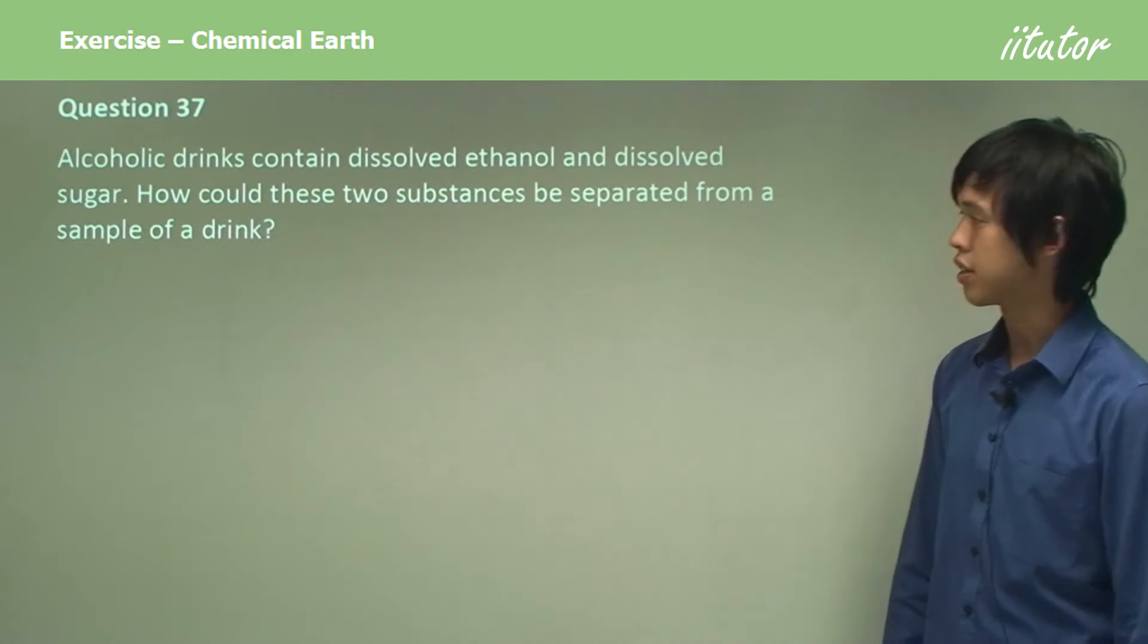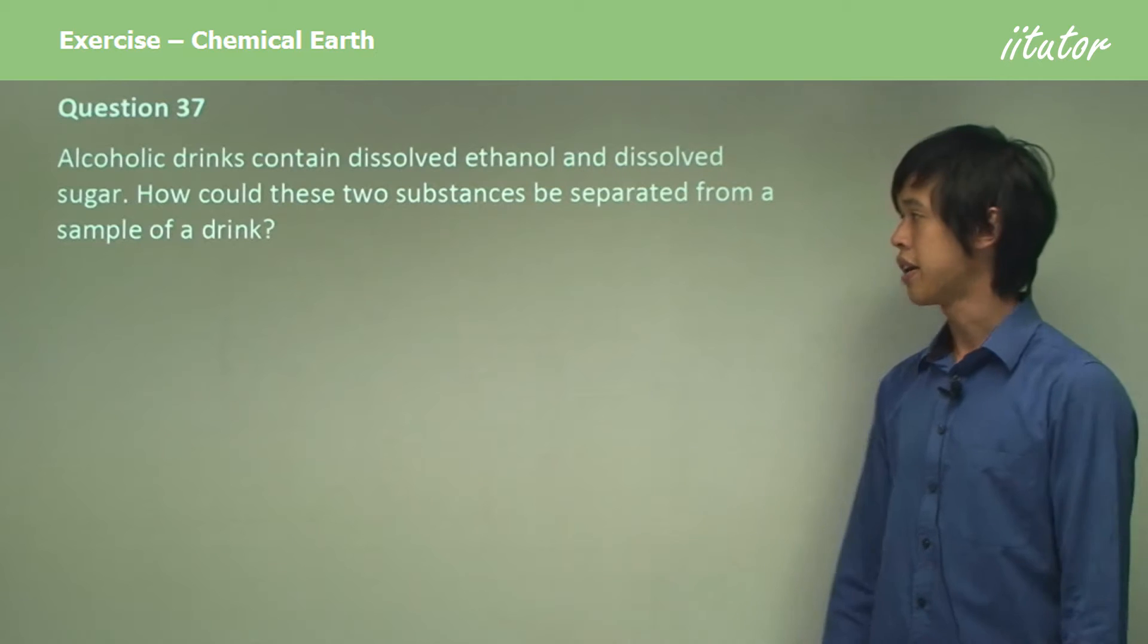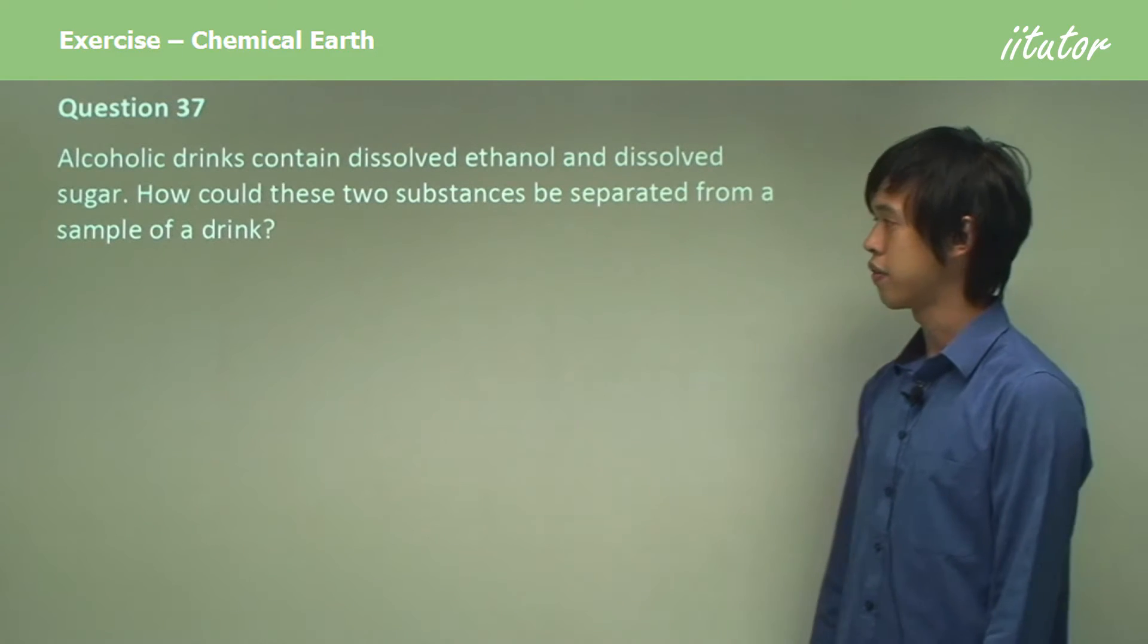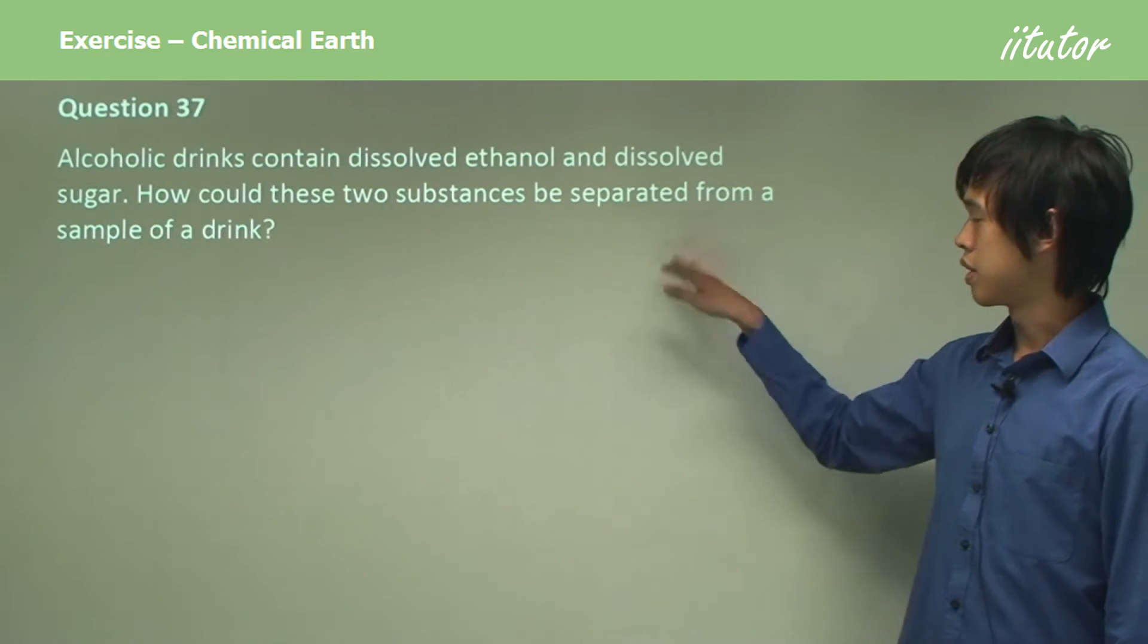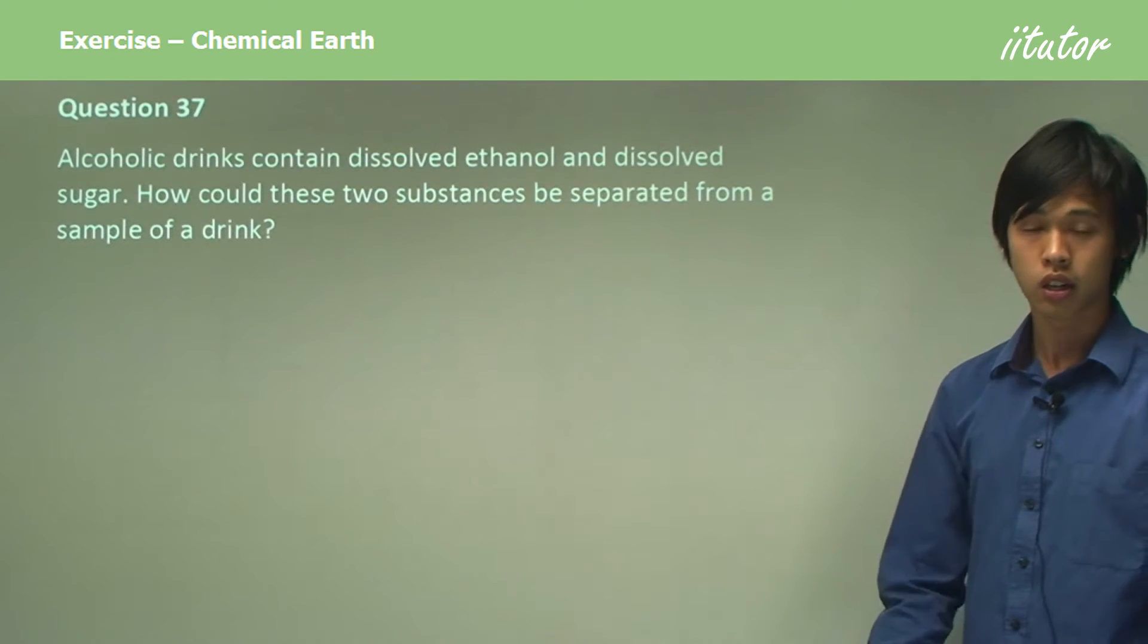Alcoholic drinks contain dissolved ethanol and dissolved sugar. How could these two substances be separated from a sample of a drink?